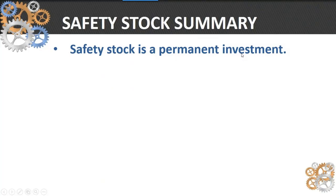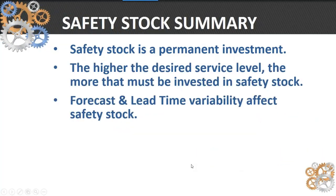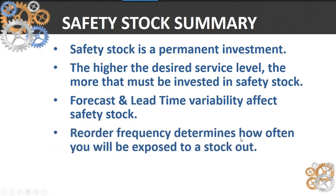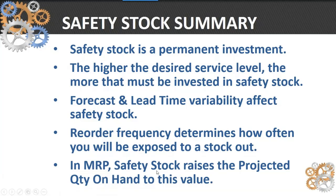To summarize safety stock: safety stock is a permanent investment. If management wants a 99% service level, they're going to have to pay for that in inventory. The higher the service level, the more must be invested. We also have to account for lead time versus forecast interval variability, and reorder frequency determines how often you're exposed to a stockout risk. In MRP, safety stock basically raises the projected quantity on hand so that instead of net zero availability, the safety stock value becomes the new zero availability threshold.